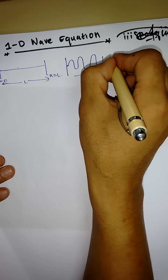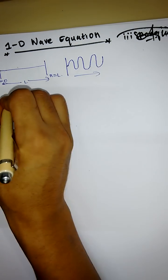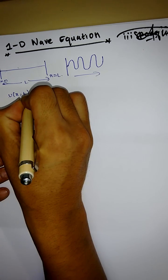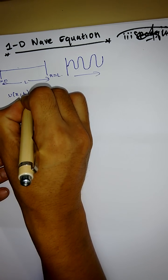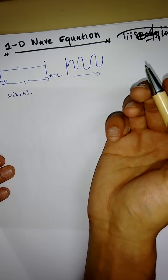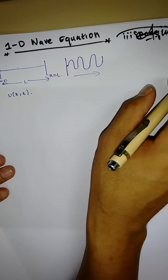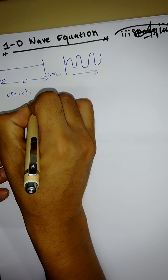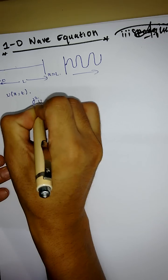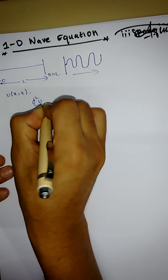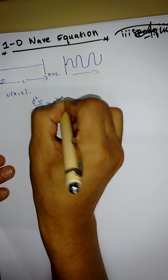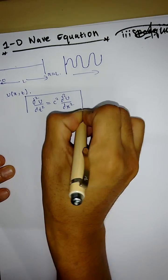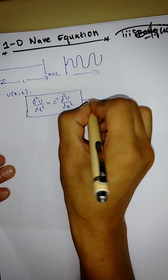Here, u(x,t) denotes the vertical displacement of the vibrating string. We use the initial boundary value problem modeled by the one-dimensional wave equation: ∂²u/∂t² = c² · ∂²u/∂x². This is the equation we are going to work with.